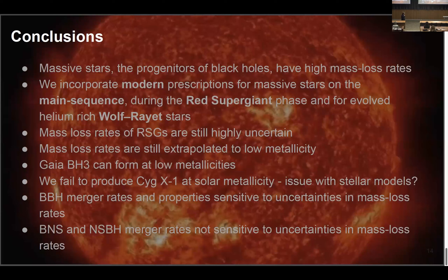To summarize: massive stars have high mass loss rates throughout their lives in various evolutionary phases — on the main sequence, as red supergiants, and as stripped Wolf-Rayet stars. We've done a literature survey of the last five years, implemented modern mass loss rate prescriptions in our rapid population synthesis code COMPASS, and used that to examine the impact on the evolution and formation of merging binary black holes. I'll leave it there and take any questions.